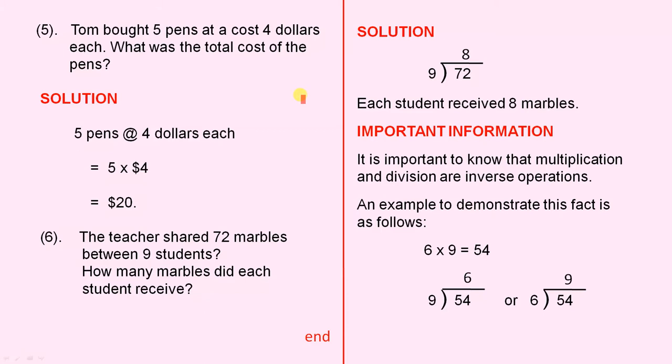Tom bought five pens at a cost of $4 each. What was the total cost of the pens? Solution. Five pens at $4 each equals five times $4 which gives you $20. Five fours are 20.